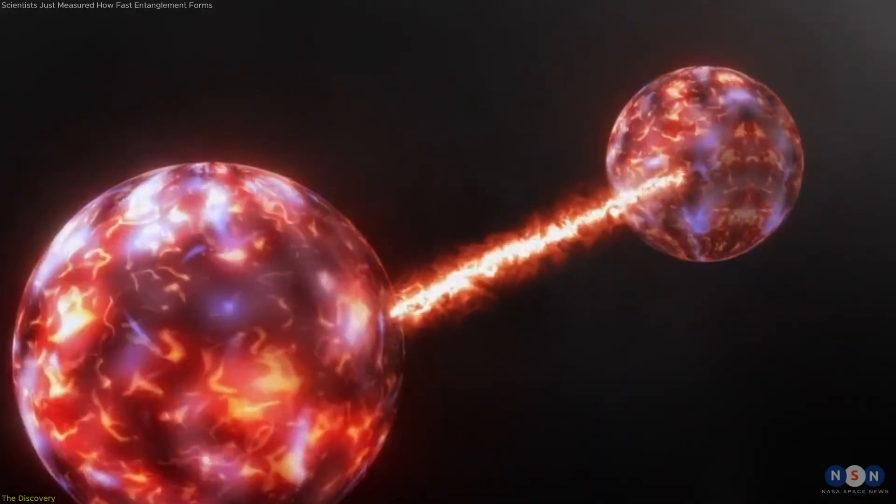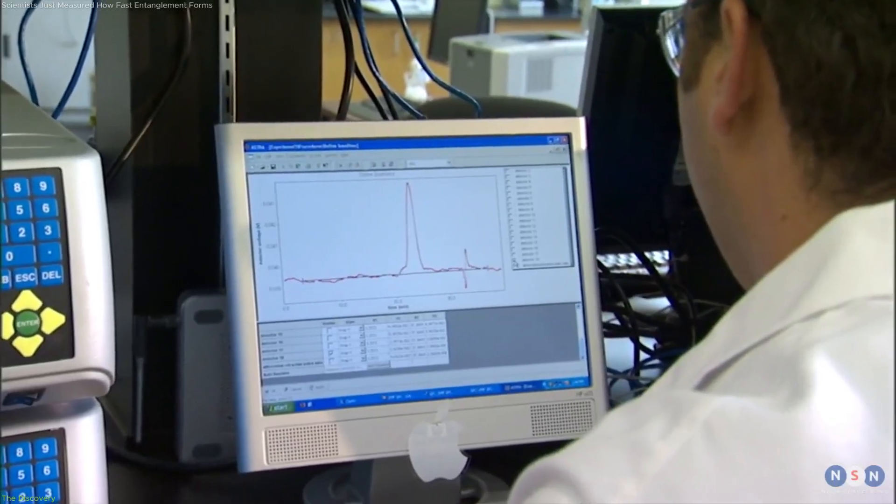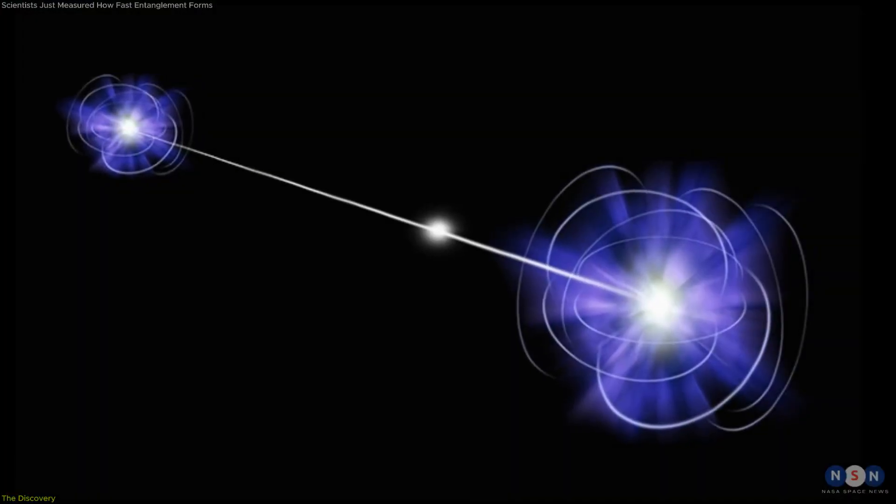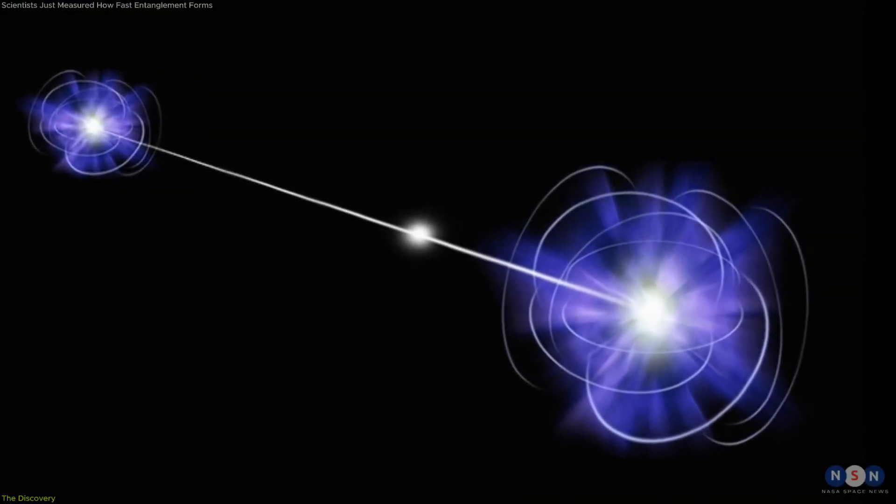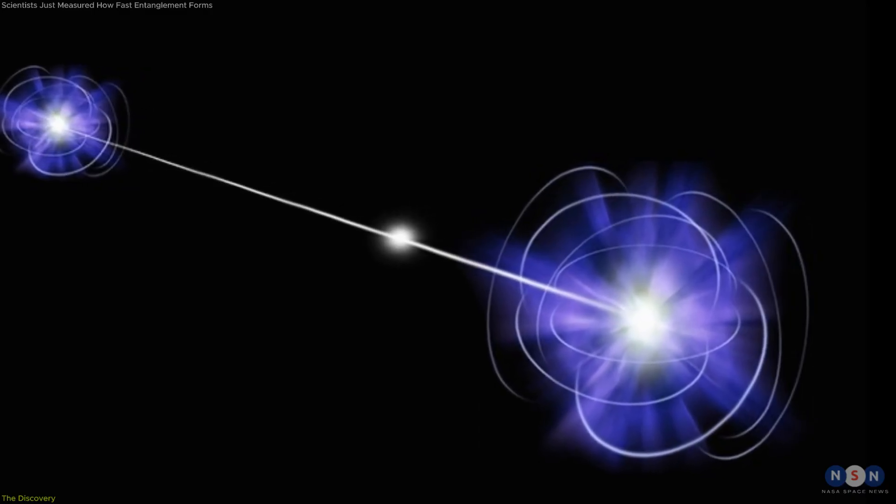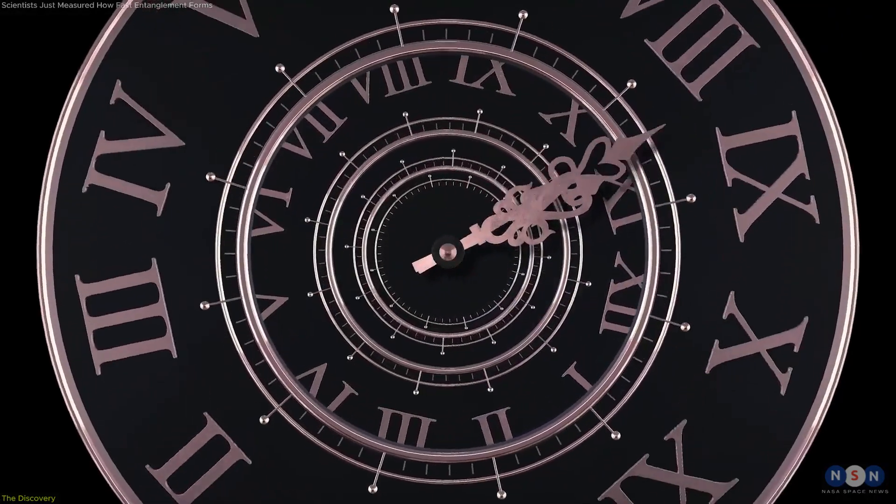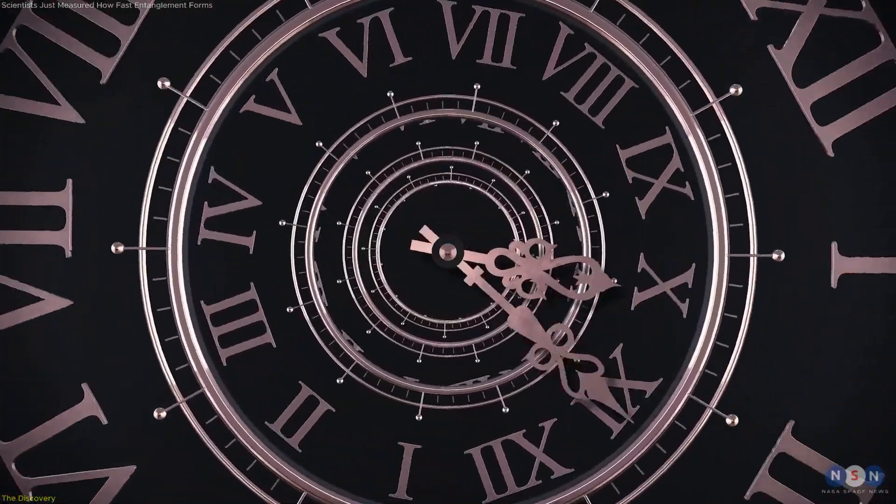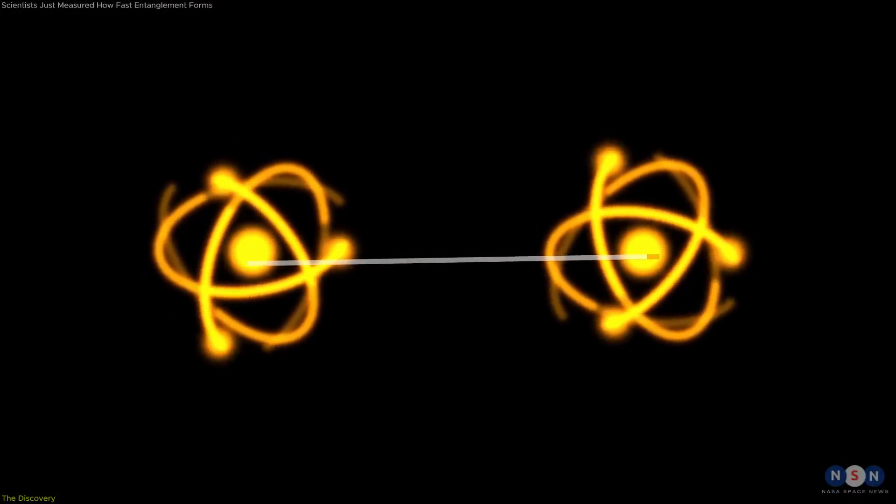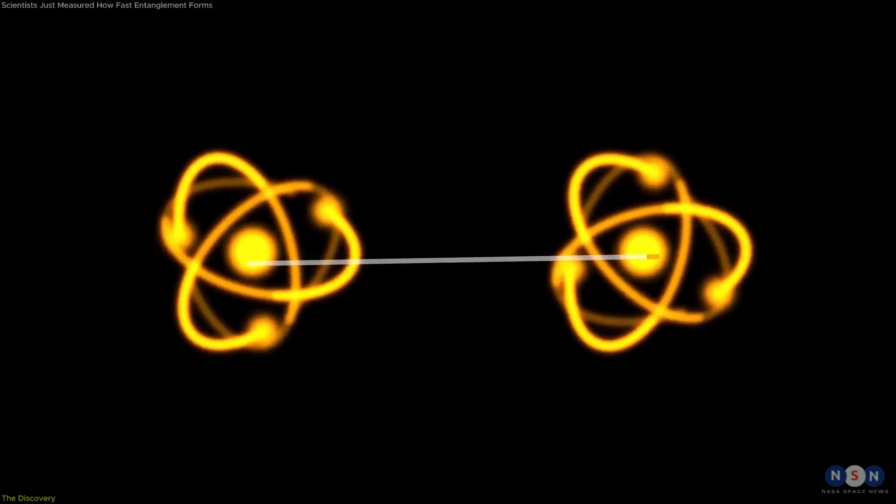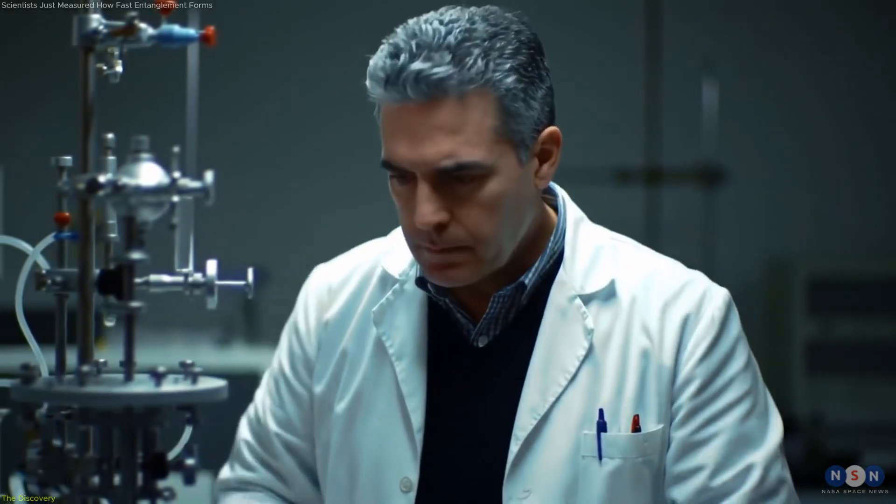Using high precision quantum simulations, the team calculated that these differences correspond to about 232 attoseconds, roughly two tenths of a quintillionth of a second. This is the time window over which the entanglement is created.